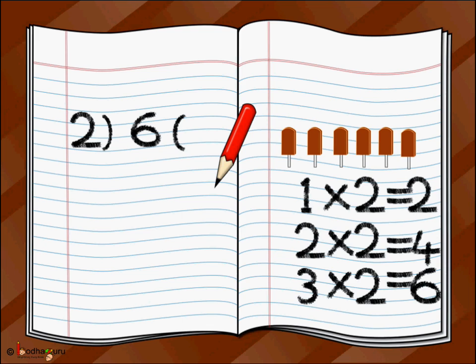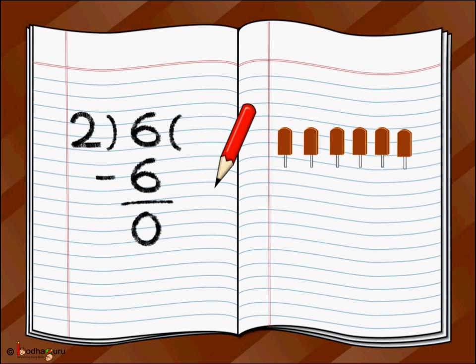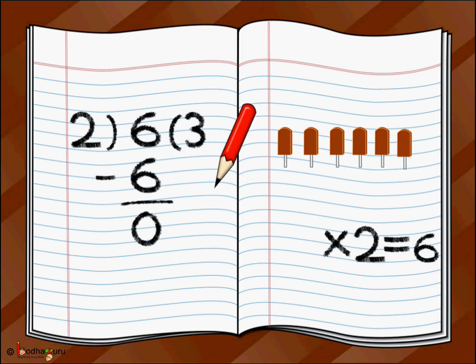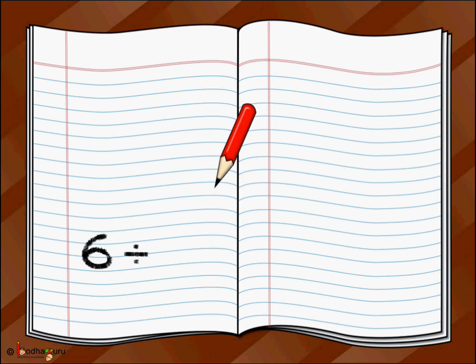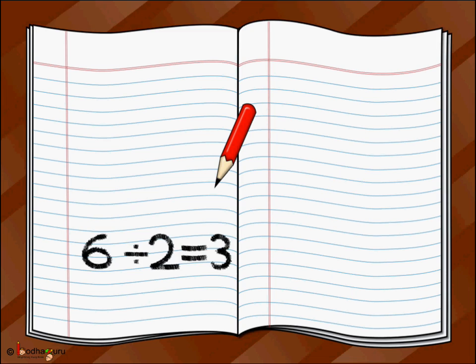So there are three groups. We write three after the right bracket as the result. We subtract six from six and that equals zero. So the result is three. We write six divided by two is equal to three, or six ice creams divided among two children means each child will get three ice creams.